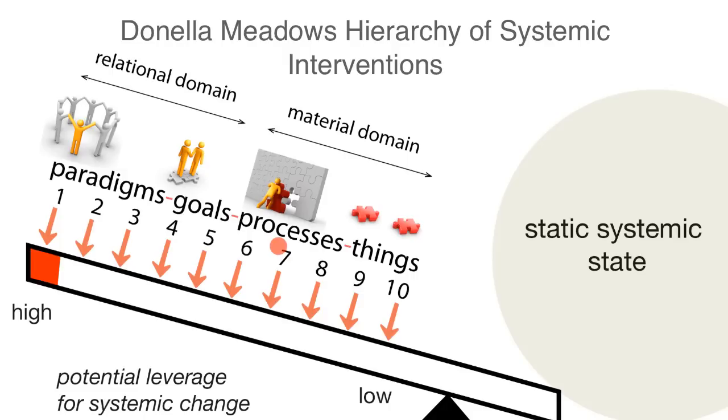Expanding it to include formal cause includes systems goals. Further expanding to consider final cause begins to ask questions about our relationship to the problem that is trying to be fixed. Who are we in this system?